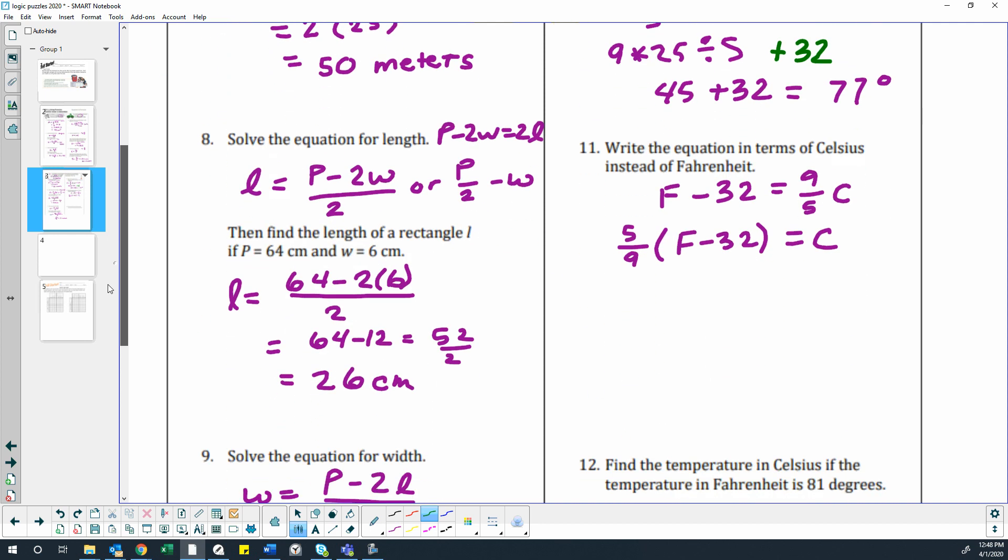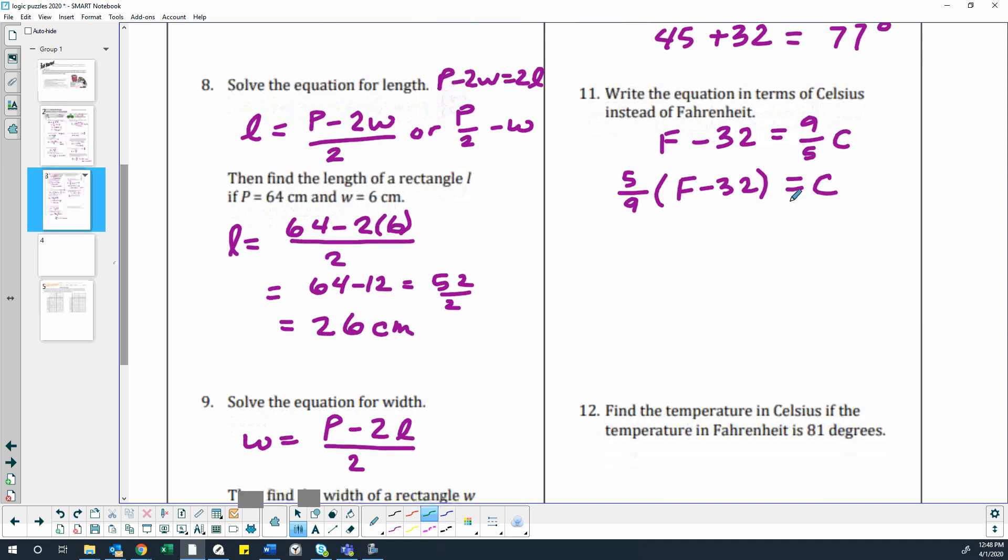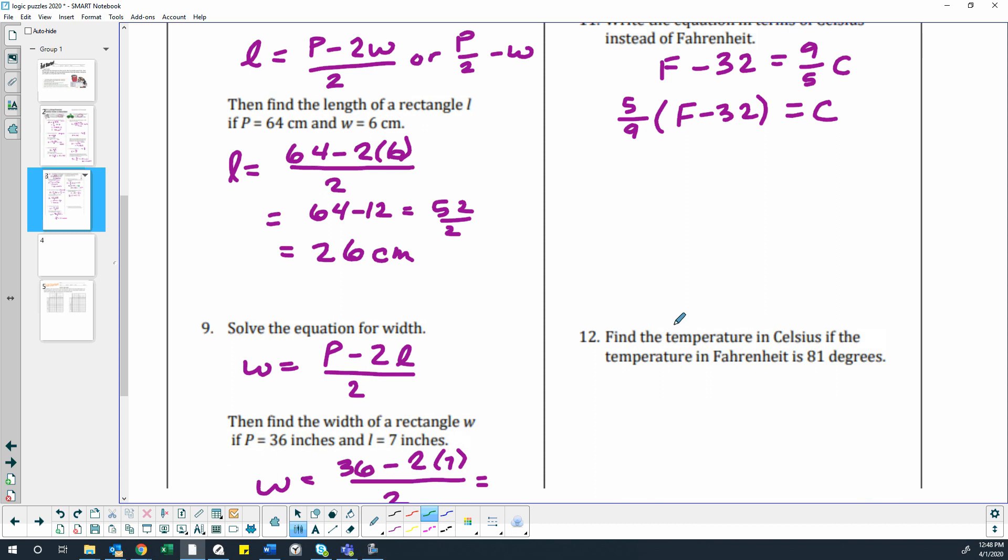So now we just need to plug in—oh well, we're done with number 11. I probably gave you too much space for that, huh? So now all we have to do is do 5 ninths of 81 minus 32, and that'll equal our temperature.